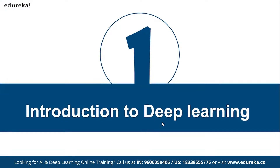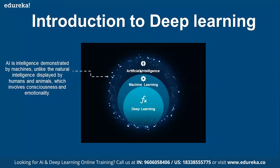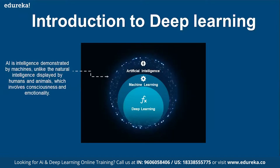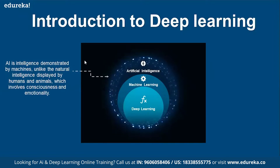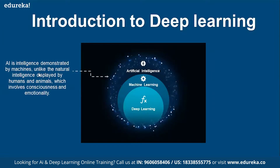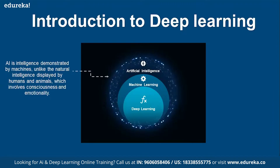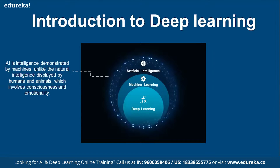We'll start with an introduction to deep learning, then move forward to RNN, one of the models in deep learning. First, let's understand the different terminologies. Artificial intelligence is where a machine or computer mimics human behavior — the same kind of operations that humans and animals do, performed by machines or agents. That's what we call artificial intelligence.